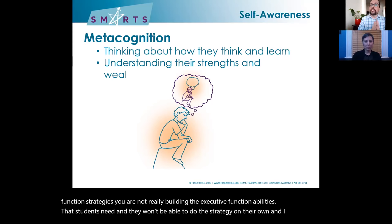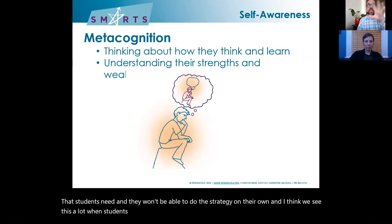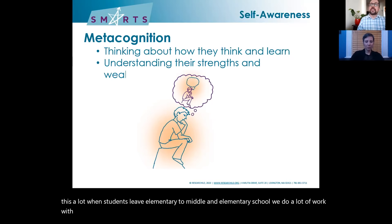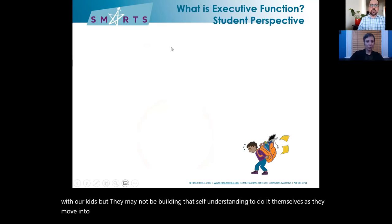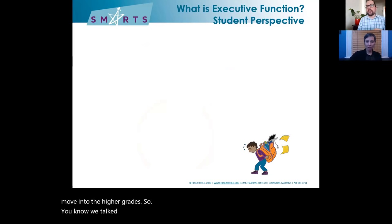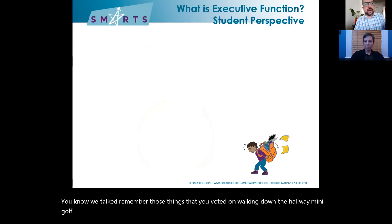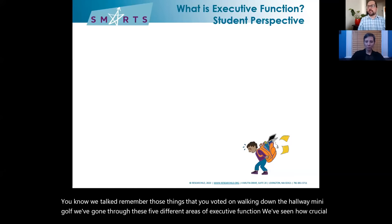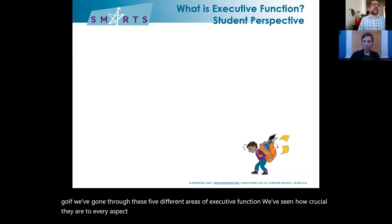We see this a lot when students leave elementary for middle school. In elementary we do a lot of EF work with our kids, but they may not be building that self-understanding to do it themselves as they move into higher grades. We've gone through these five different areas of executive function and seen how crucial they are to every aspect of school — they're really at the heart and key to successful learning.